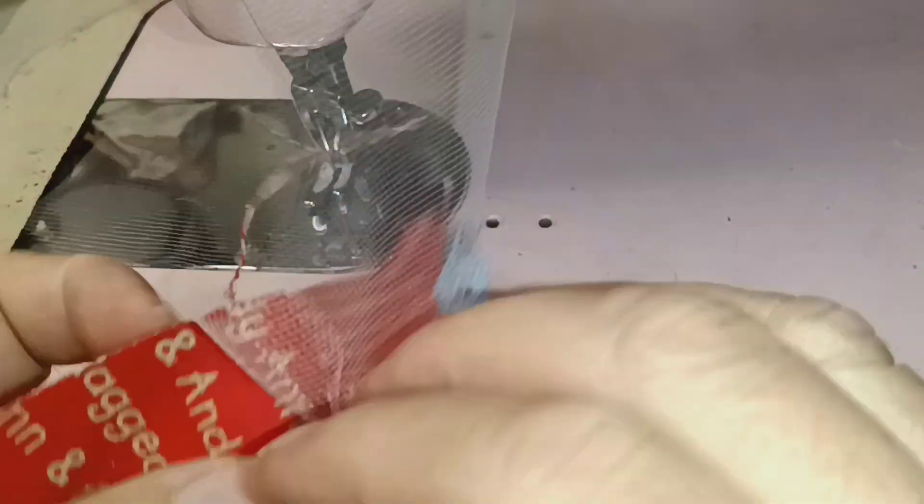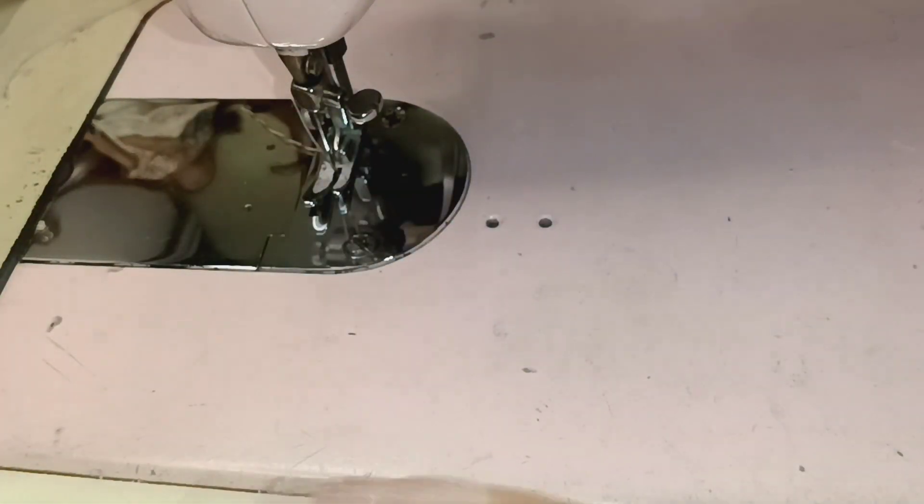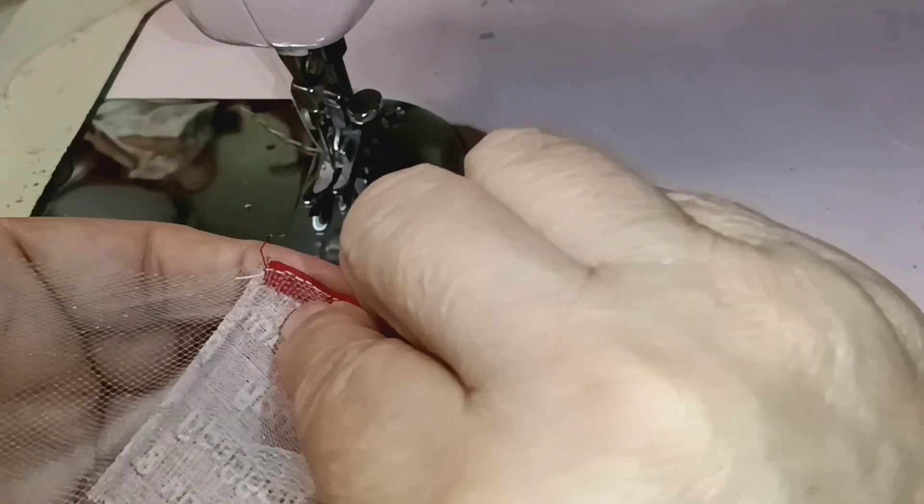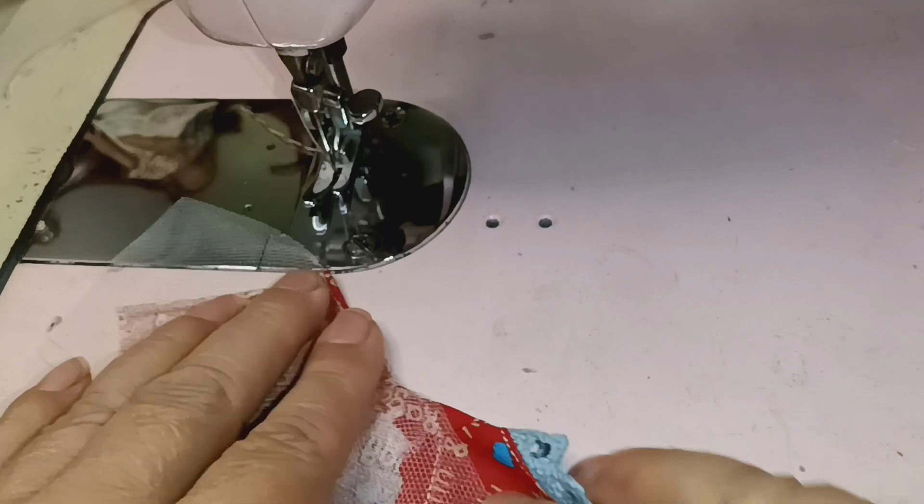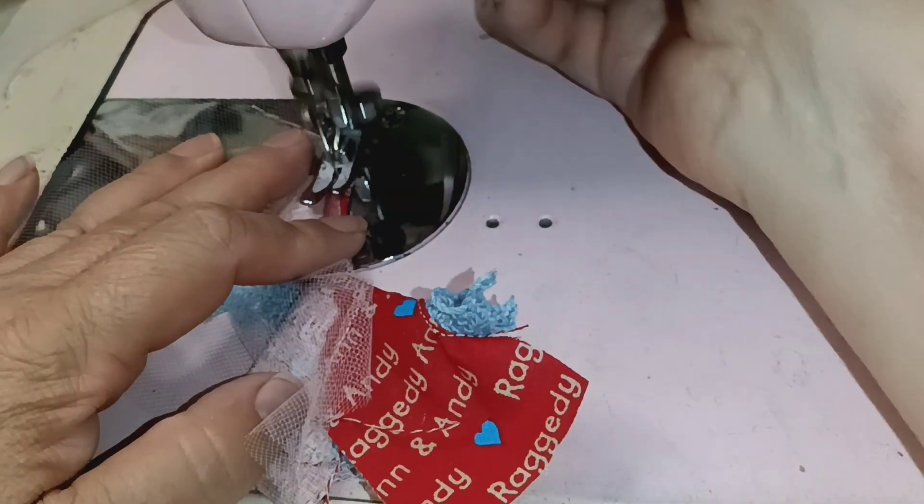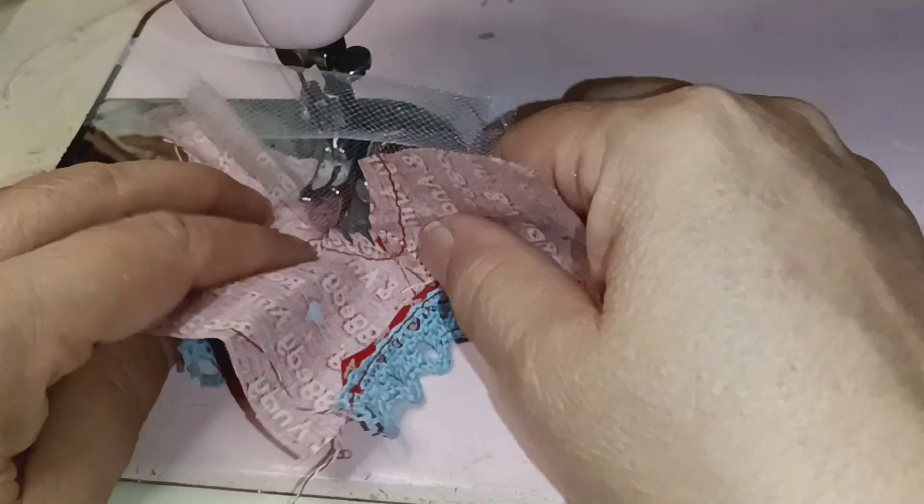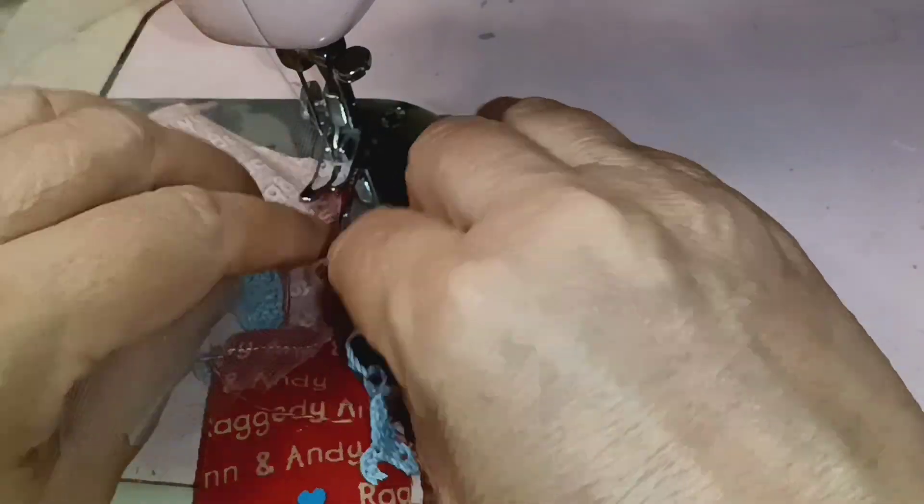So here we go, this is our tool. Now I am going to sew it from this part so that we can get red thread on the outside. Now I'm using the tool which is helping me fold this over and see how easy this is with the tool.